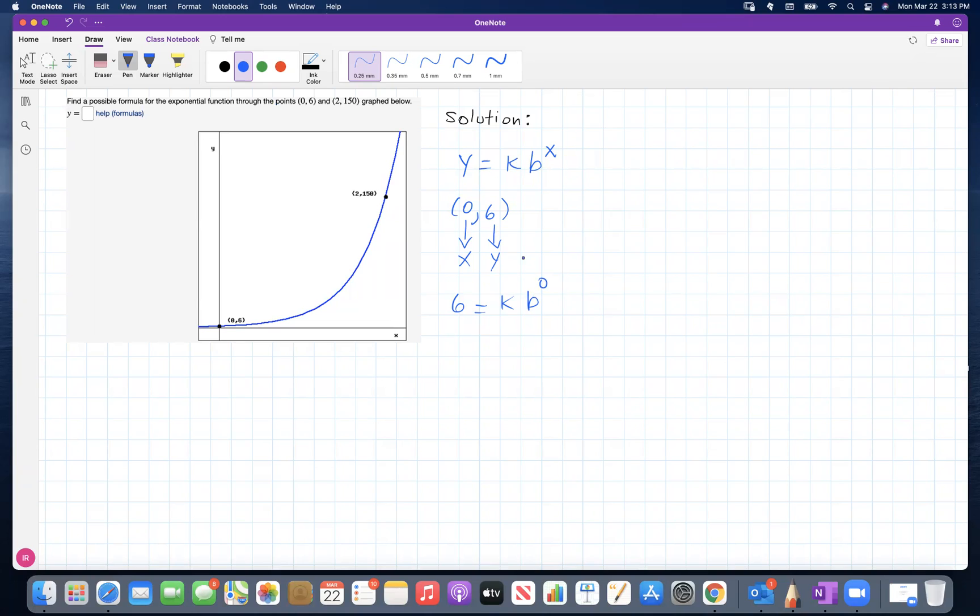Notice that b raised to 0, since b is positive, should be just 1. We have this nice property: any positive number raised to 0 is equal to 1. So this tells me that k, the constant, should be equal to 6.